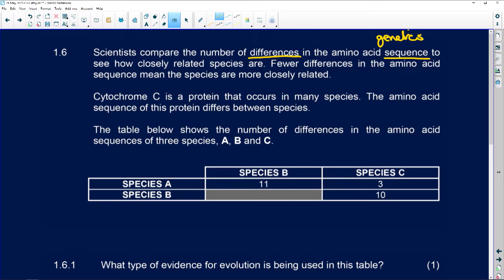We're going to see how closely related species are. That would be phylogenetics because you're looking at the phylums. But fewer differences in the amino acid sequences means that the species are more closely related. Less differences, the closer they are.